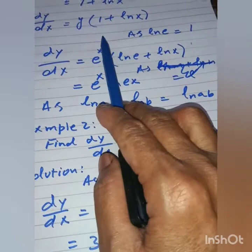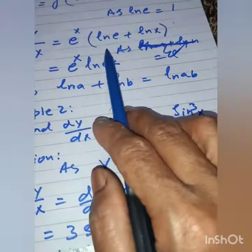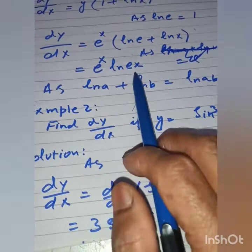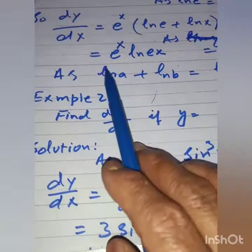Then dy/dx = x^x · (log e + log x), because y = x^x. This can be written as x^x · log(ex), since log(e) + log(x) = log(ex) by the logarithm product rule.